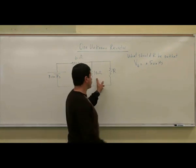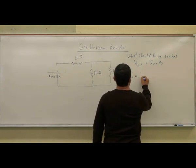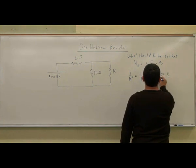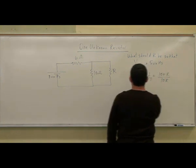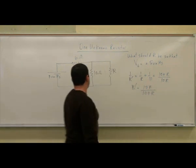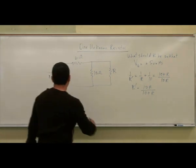So you have one over R prime is equal to one over R plus one over 10, so you have 10 plus R over 10R. So R prime is equal to 10R over 10 plus R. So essentially you do it just like as if you knew what the resistance was, okay?